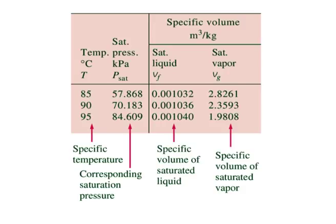Saturated liquid and saturated vapour states. The properties of saturated liquid and saturated vapour for water are listed in table A4 and A5 of the downloaded document. Both tables give the same information. The only difference is that in table A4, properties are listed under temperature, and in table A5 under pressure. Therefore, it is more convenient to use table A4 when temperature is given and table A5 when pressure is given. The use of table A4 is illustrated here in this figure. The subscript F is used to denote properties of saturated liquid and the subscript G to denote the properties of saturated vapour. These symbols are commonly used in thermodynamics.